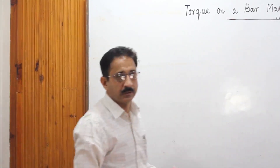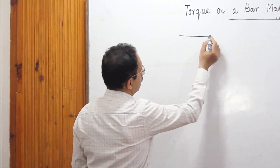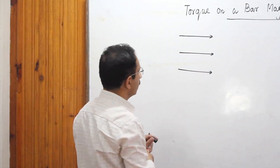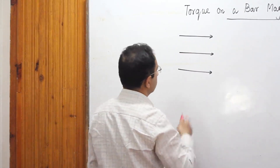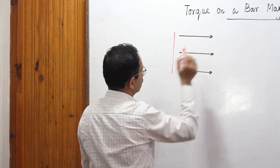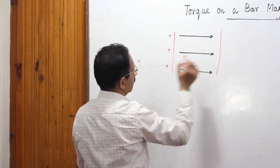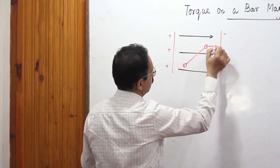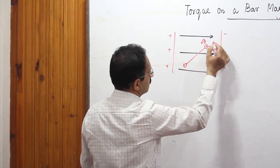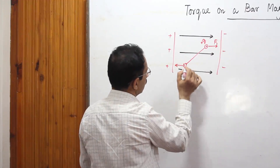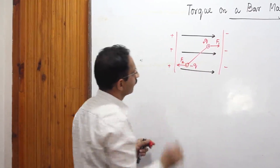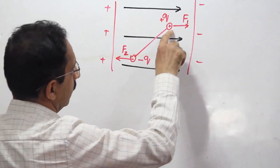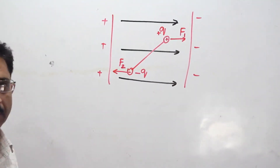We develop this concept by taking an analogy with a uniform electric field. An electric dipole placed in a uniform electric field consists of two equal and opposite charges. The negative charge is attracted towards the positive plate and the positive charge is attracted towards the negative plate — so opposite charges are pulled in opposite directions.